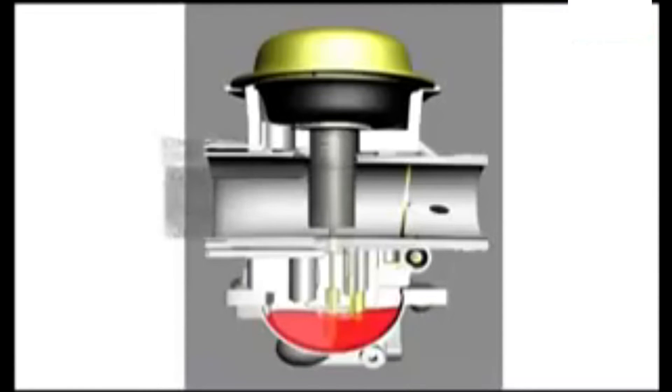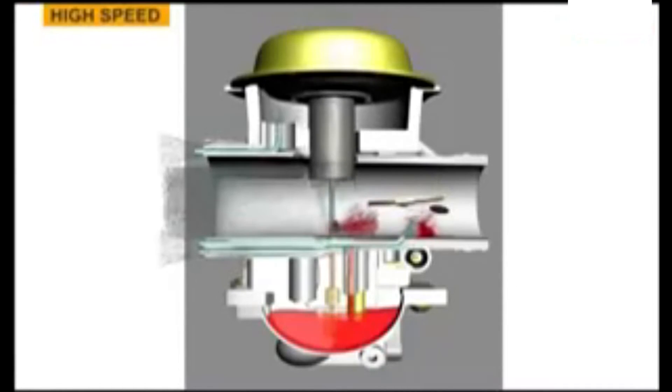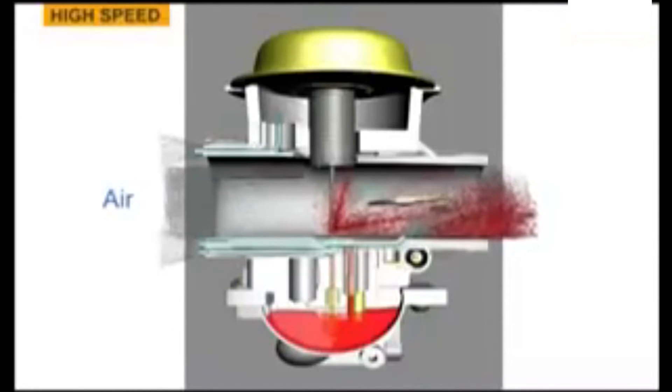Now, at full throttle, it's much the same, except for now the slide is clear up all the way into the bore, and the main jet is fully open. Now, the jet needle is not doing anything to control the fuel through the main jet. So, the main jet is flowing at maximum capacity at full throttle. So, the only real adjustments you have at full throttle or high speed is that main jet.